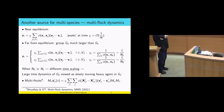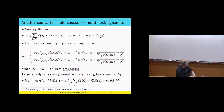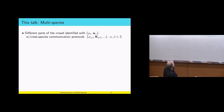We now have to take into account that there are masses. The mass has to do with flock alpha, there are small velocities, the velocity dot of agent i at flock alpha, and it's balanced by the usual interaction between these velocities, taking into account the masses. We have different parts of the crowd identified with different densities and velocities, and cross-species communication with different protocols.